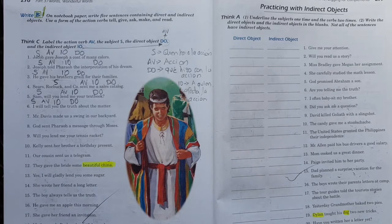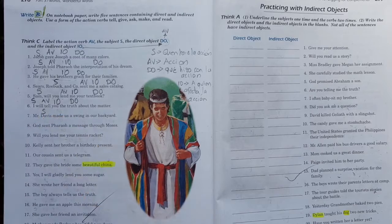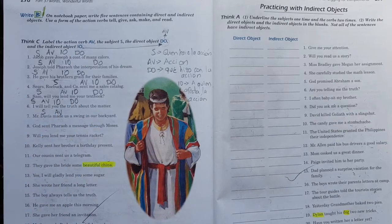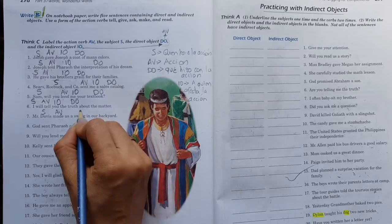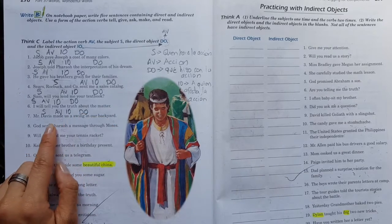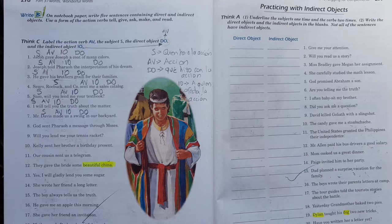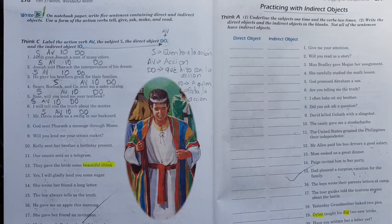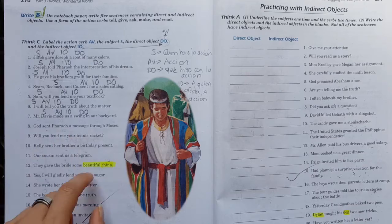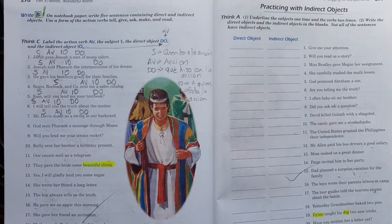Entonces, repasando, por ejemplo, el número cuatro. Las tiendas Sears, Roebuck & Co. Ellas, ¿qué van a hacer o qué están haciendo? Enviar. ¿Pero qué hizo con la acción? Un texto. ¿Y a quién afecta esta acción? A mí. Es la lógica a la que se supone que ustedes deben llegar. Luego dice el punto número siete. Mr. Davis made us a swing in our backyard.